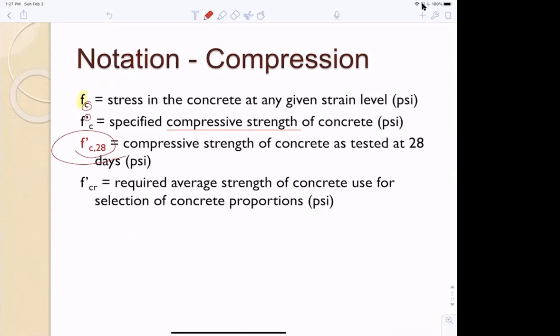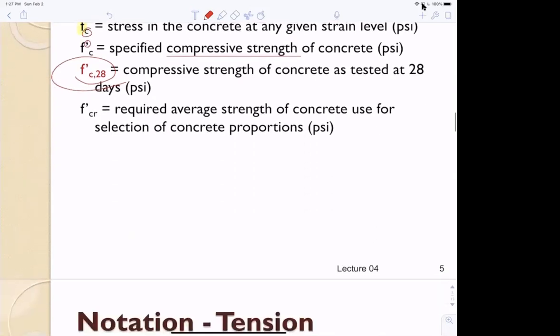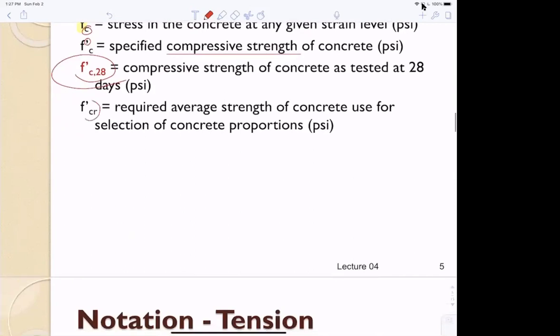So if you made concrete on a Tuesday, 28 days later it'd still be a Tuesday and you would break it. F prime CR - the R stands for required average. For the longest time, I didn't know what the R stood for, so I remembered it as F prime C ravage. It really is required average.